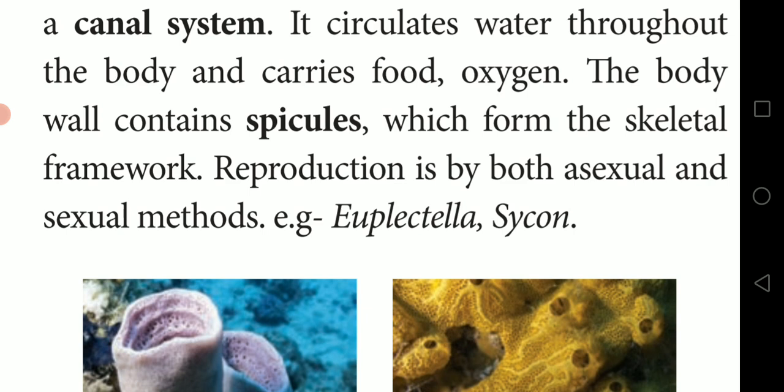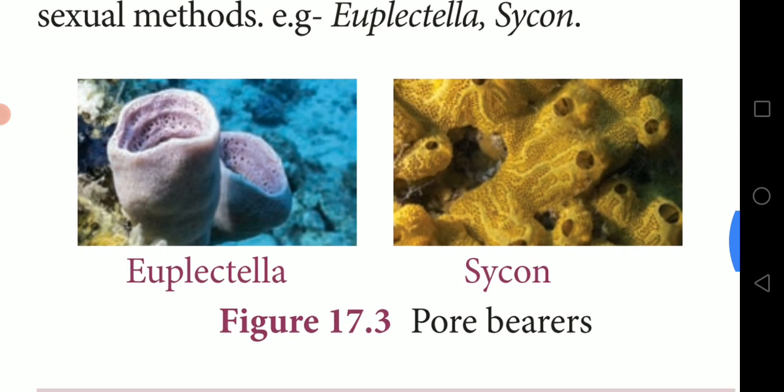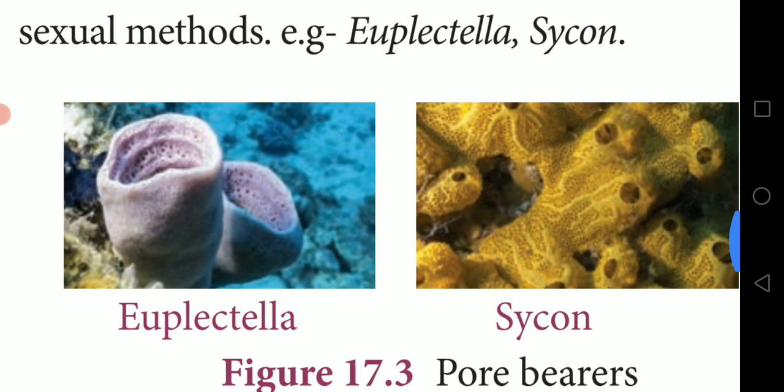The body wall contains spicules — spine-like or thorn-like structures. These small spicules form the skeletal framework of the organism. Reproduction is by both asexual and sexual methods. Examples of Phylum Porifera include Euplectella and Sycon. These are the main characters of Phylum Porifera.